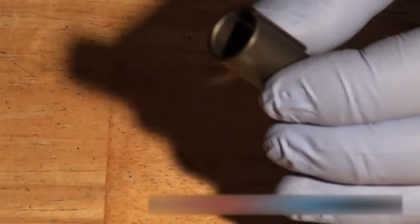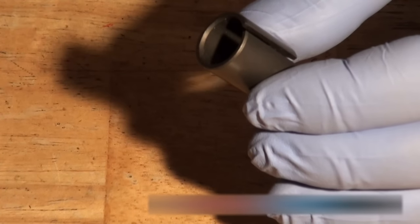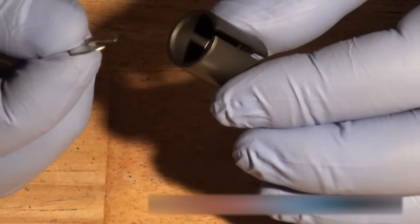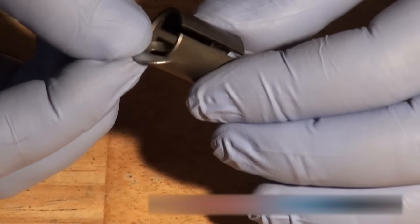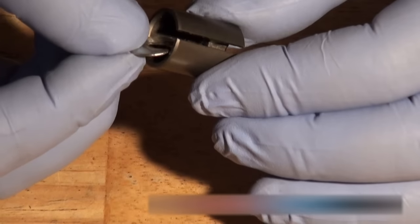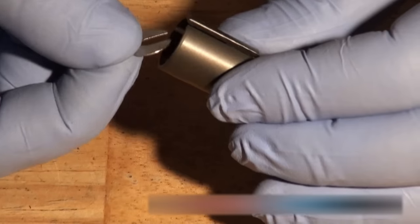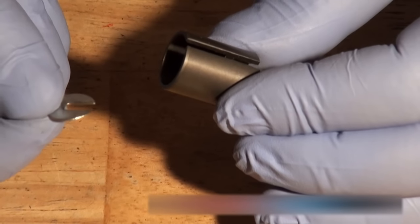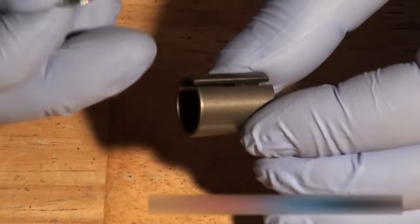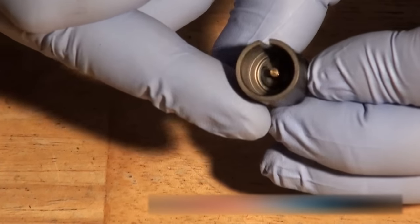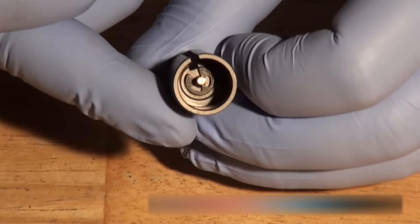Now there's a circlip which fits inside here. This fell out when we were taking it apart, but it just goes inside here and you need to make sure the opening on the circlip lines up with the opening on the side of the barrel. I'll just install this and then I'll show you what it looks like when I've installed it.